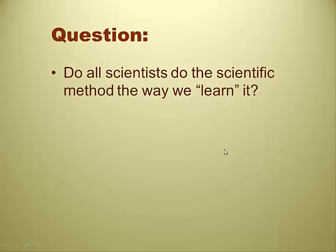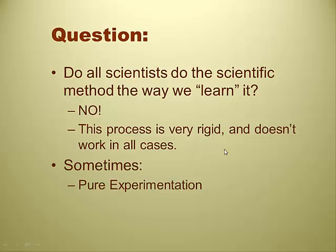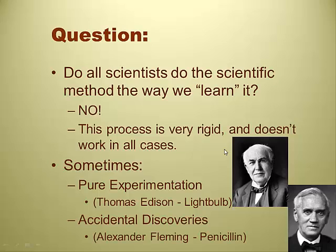Do all scientists do the scientific method the way we just described? Turns out, no. Science is a rigid process but doesn't always have to follow that same format. Sometimes we wind up with pure experimentation. Thomas Edison invented the light bulb — his lab notebook had hundreds of experiments written down; a feather didn't work, experiment failed, failed, experiment failed. He tried hundreds of different things before coming across a tungsten filament. And then there are accidental discoveries — the world's full of them. Alexander Fleming accidentally discovered penicillin.